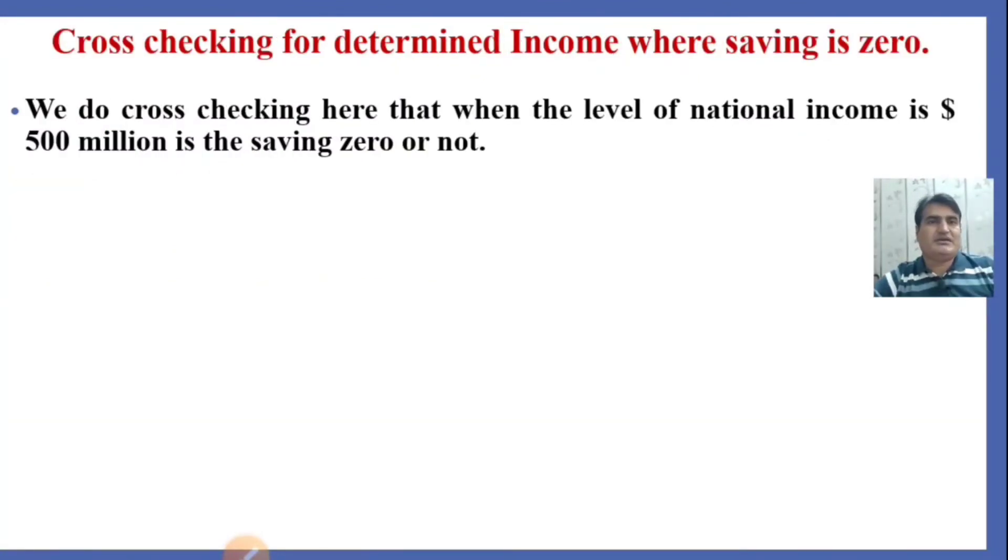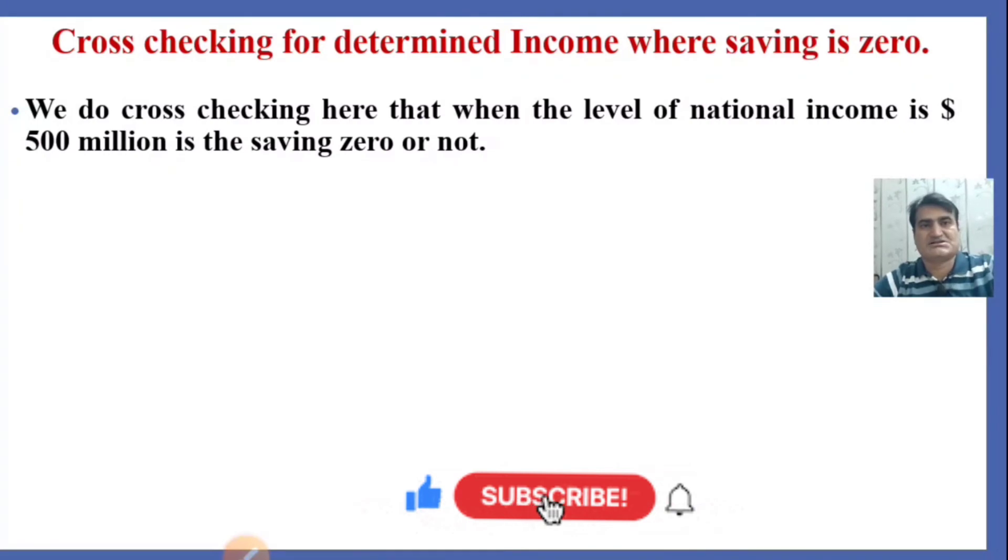We do cross-checking here that when the level of national income is 500 million dollars, the saving is zero or not. Given consumption function is 100 plus 0.8Y.